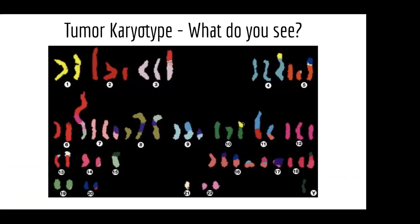This figure is an example of what we call a tumor karyotype. It's been done by FISH — fluorescent probes of different colors that are specifically attached to different chromosomes. You can see where chunks of chromosomes are missing, where they're jumping to different parts of other chromosomes, where chromosomes are being duplicated, and where they're being inserted.